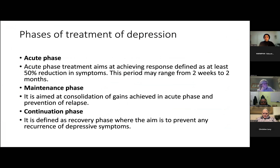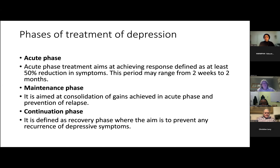In terms of the treatment of depression, there's the acute phase, the maintenance phase and the continuation phase. The acute phase is the initial period ranging from two weeks to two months — the aim is to reduce the severity of symptoms by at least 50%, using rating scales or clinical judgment. The maintenance phase is to consolidate the gains in the acute phase and prevent relapse. And the continuation phase — known as the recovery phase — is to maintain them on a lower dose of medication and continue therapies, which might be fortnightly, then monthly, and eventually finish off.